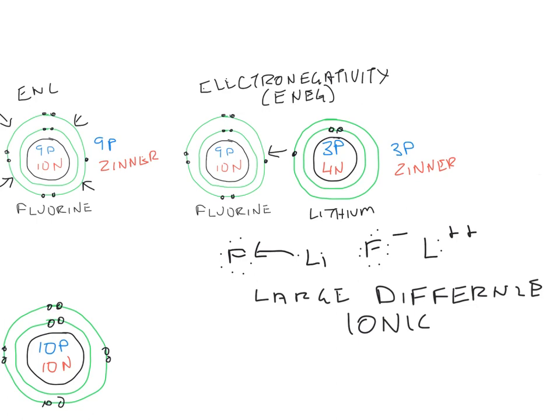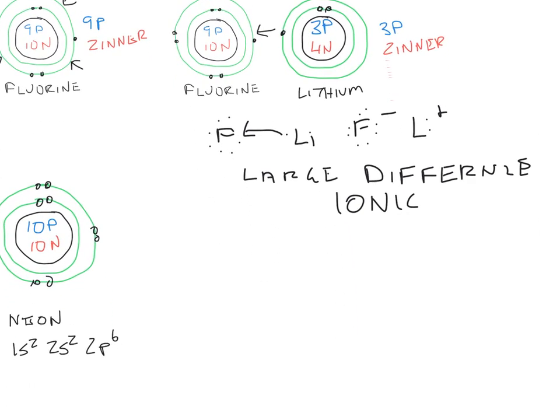On the other hand, if we have things with a smaller difference, say carbon and oxygen, the difference between these two—oxygen is 3.5, carbon is 2.5—they're close enough in their abilities to attract other electrons that you don't have this case where one of them is simply stealing the electron from the other. Since they're both roughly comparable in strength, they end up sharing.